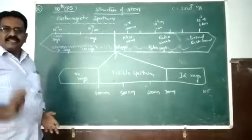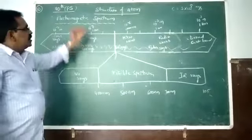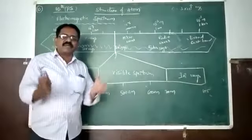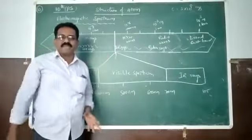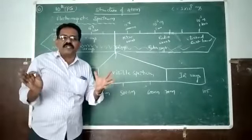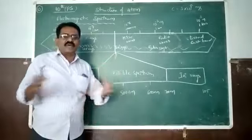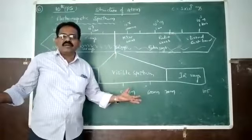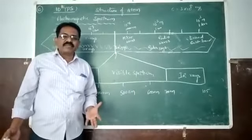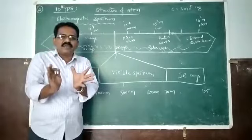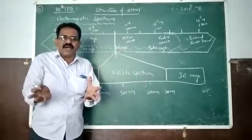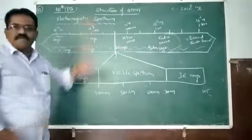Spectrum means a group of frequencies or wavelengths. The spectrum consists of seven colors. The seven colors have different wavelengths. That is why a group of wavelengths is called spectrum.